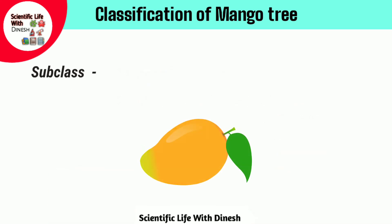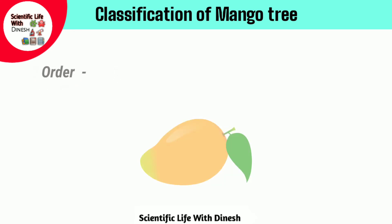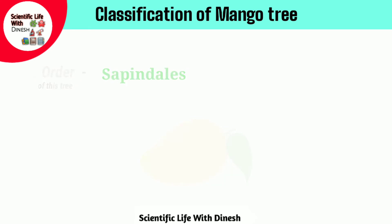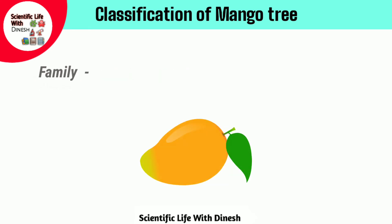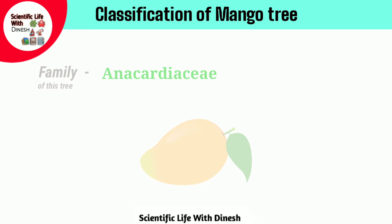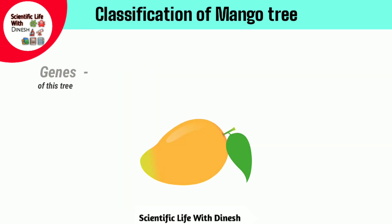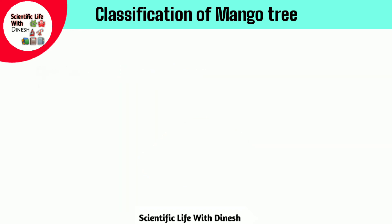And sub-class of mango tree is Rosidae. And the order of mango tree is Sapindales, and family of mango tree is Anacardiaceae, and genus of mango tree is Mangifera, and species of mango tree is indica.